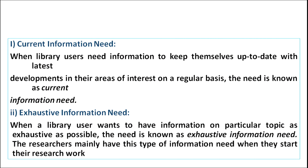Current information need: when library users need information to keep themselves up to date with the latest developments in their area of interest on a regular basis, this need is known as current information need. Exhaustive information need: when a library user wants information on a particular topic as exhaustive as possible, it is known as exhaustive information need. Researchers mainly have this type of information need when they start their research work.